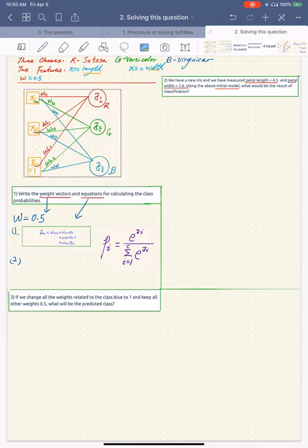So the second sub-question we have the length value 4.5, x1 is 4.5. And width 1.6, so x2 is 1.6, and all the weight values don't change. And we can calculate the exact value for each class. So we could start from z1.